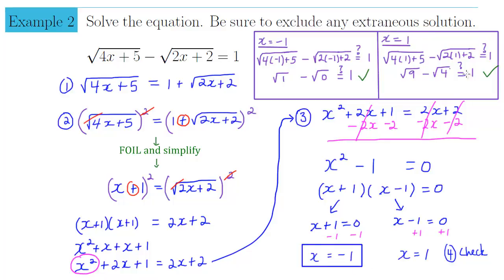x = 1 is also a valid solution. Plugging in x = 1: √(4+5) − √(2+2) = √9 − √4 = 3 − 2 = 1. This checks out. Both of our solutions ended up working, so we circle them both — x = −1 and x = 1. We've finally solved this beast of a problem.